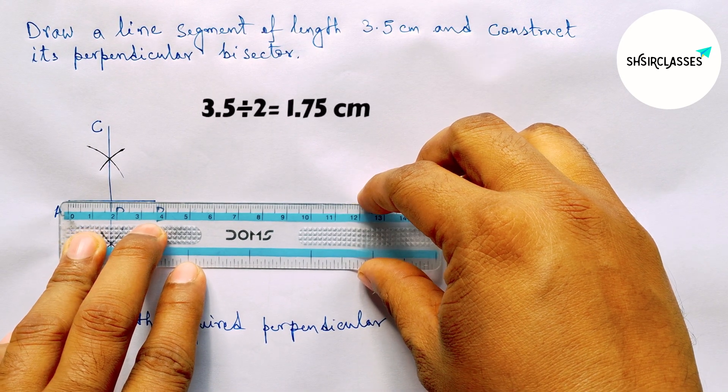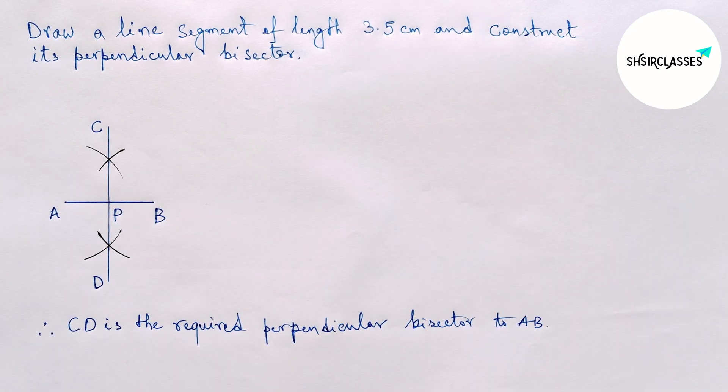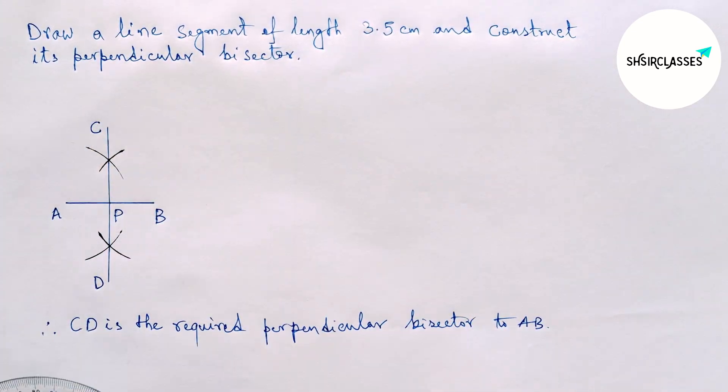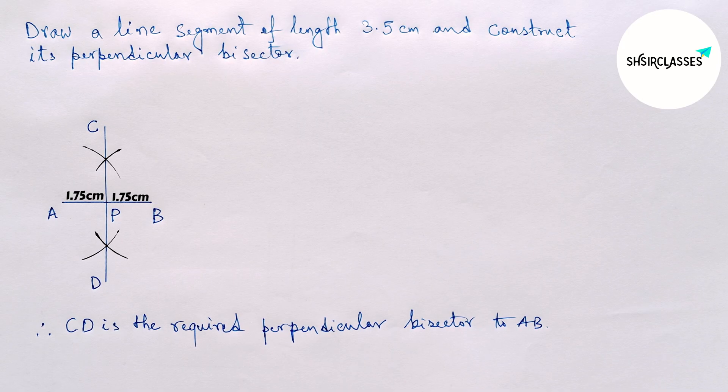or not. This perfectly bisects the line AB and here this is 90 degrees, which means perpendicular. So that's all, thanks for you.